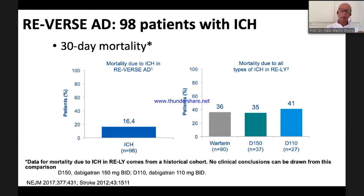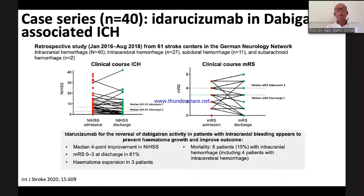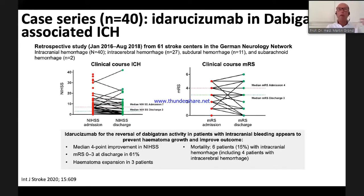For my first patient treated with idarucizumab: there was no growth of the bleeding, and the patient went to a rehabilitation ward after two weeks in quite good condition. Our first published German case series of 40 patients showed: median NIH Stroke Scale on admission was 7, and at discharge was 3; hematoma expansion occurred in only 3 patients; and mortality was low at 15% — matching well with the REVERSE-IT data.